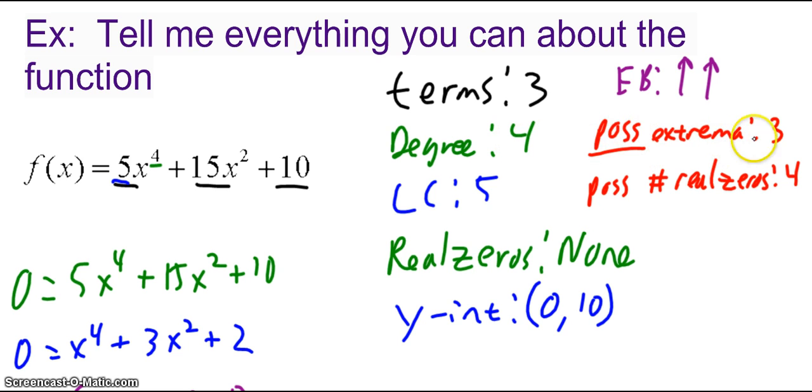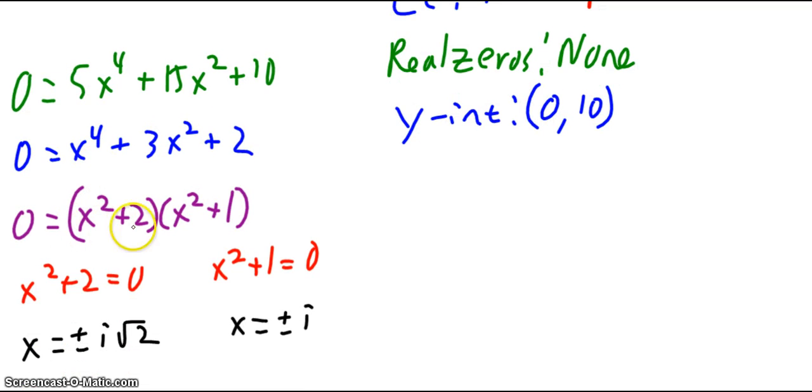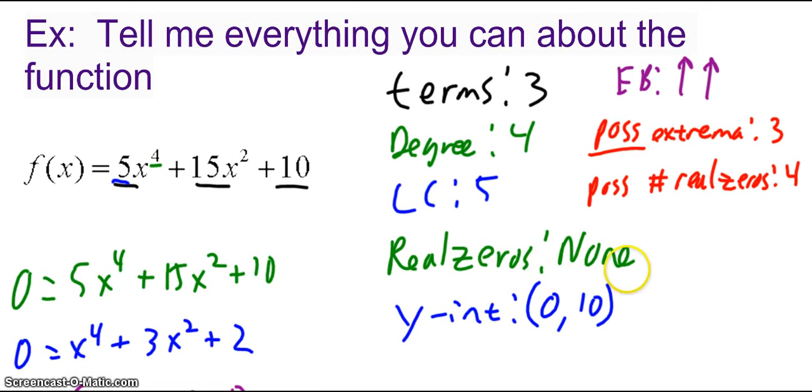Since the degree is 4, the possible number of extrema is 3. Since the degree is 4, the possible number of real zeros is 4. The actual real zeros in this case come out to be none. We can see that here. I set the function equal to 0. I divided everything by 5 to simplify. Then I factored into x squared plus 2 times x squared plus 1, set each factor equal to 0, and I get x equals plus or minus i root 2, and x equals plus or minus i. So I ended up with four actual zeros, but none of them are real. So real zeros is none. Y-intercept is the point 0, 10. I get that by plugging in 0 for x, and I'm left with just 10.